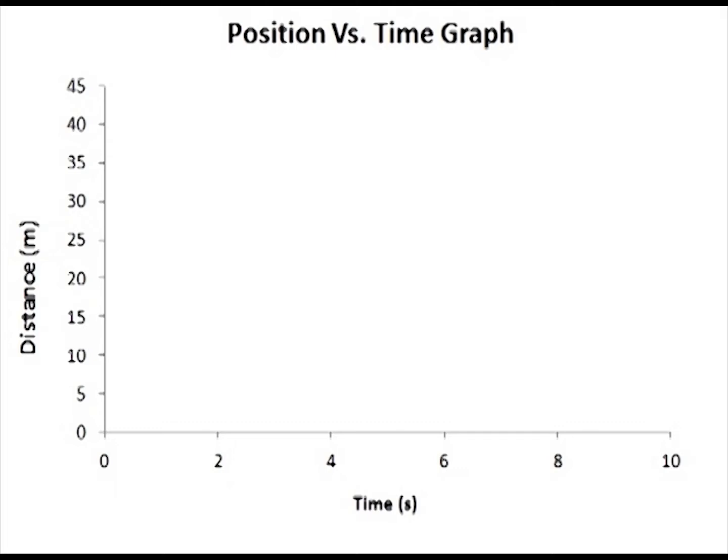Distance time graphs. If I have a person that moves at a constant velocity, then that could look like this. So this would be a constant speed. Then let's say that person takes breaks, sits down on a bench and has a sandwich. So here we call this stationary.